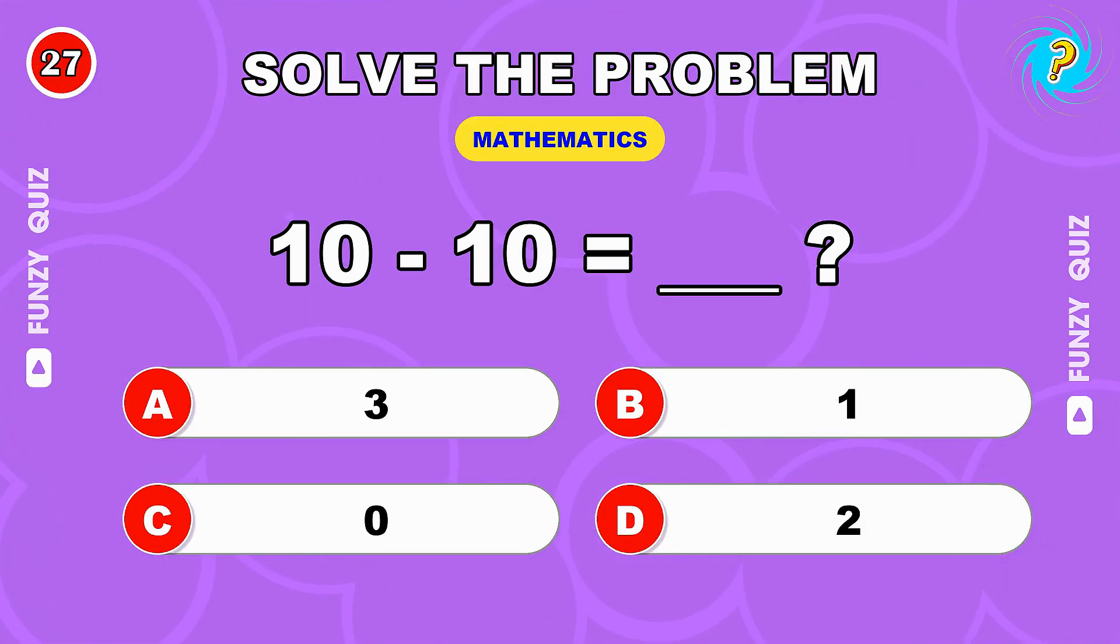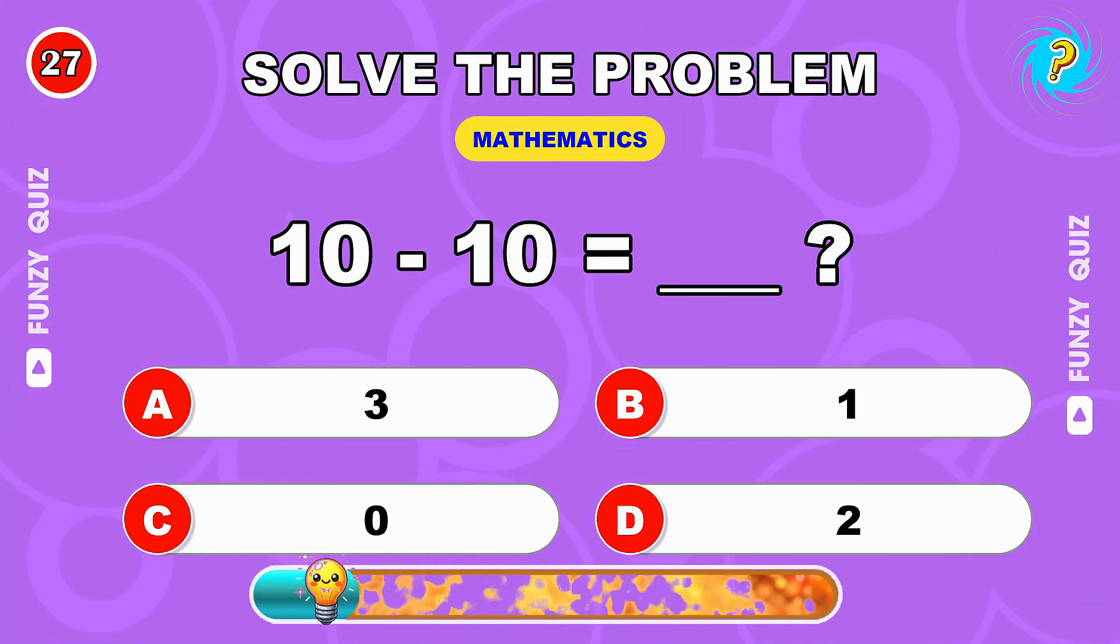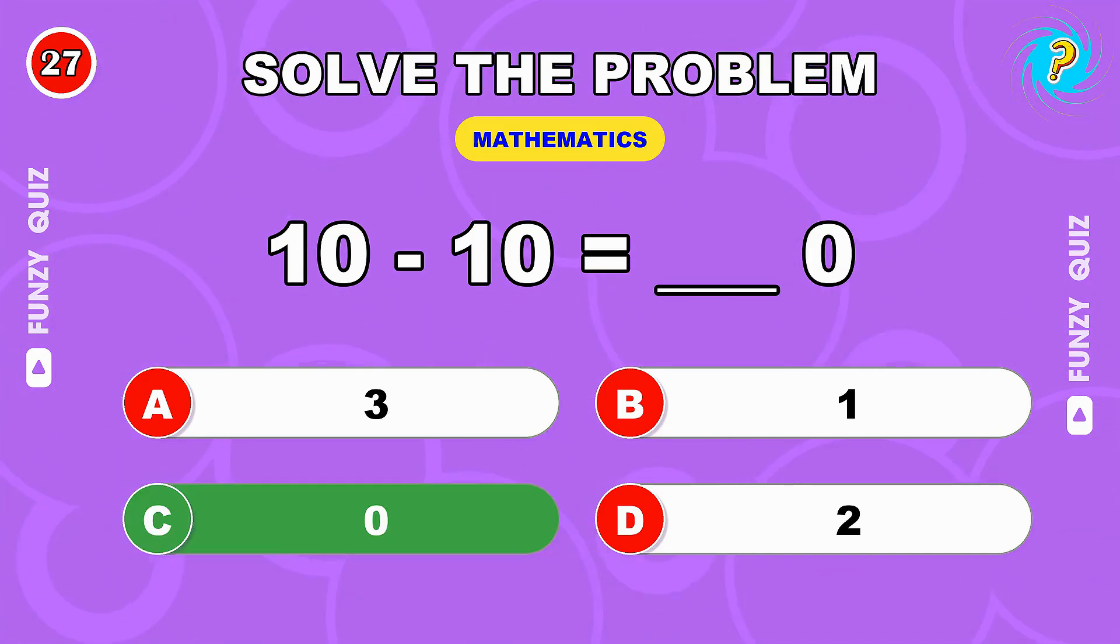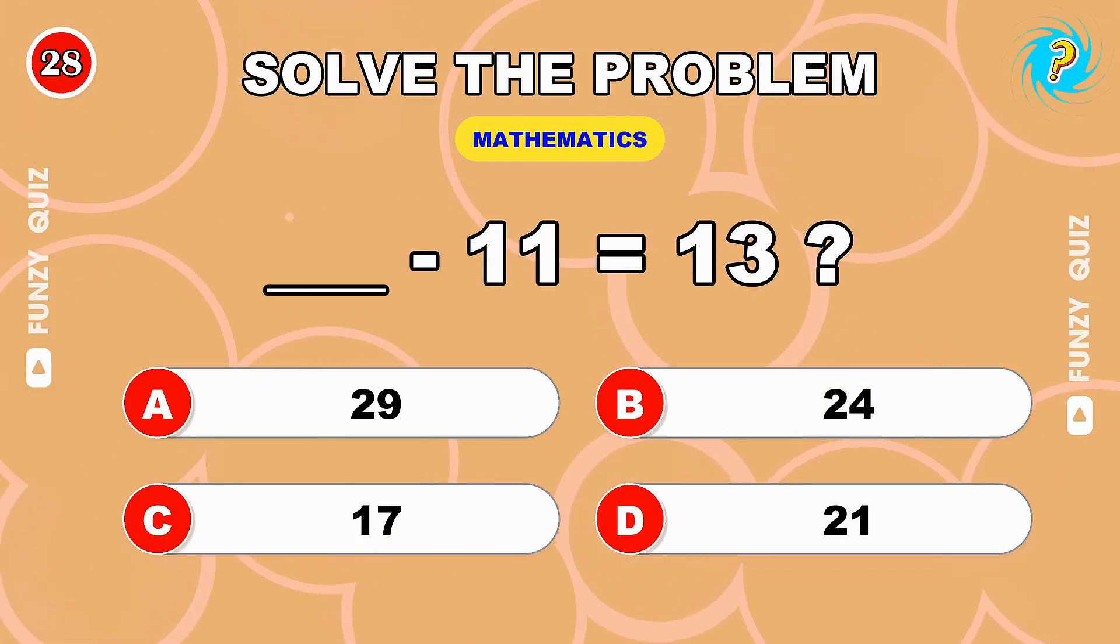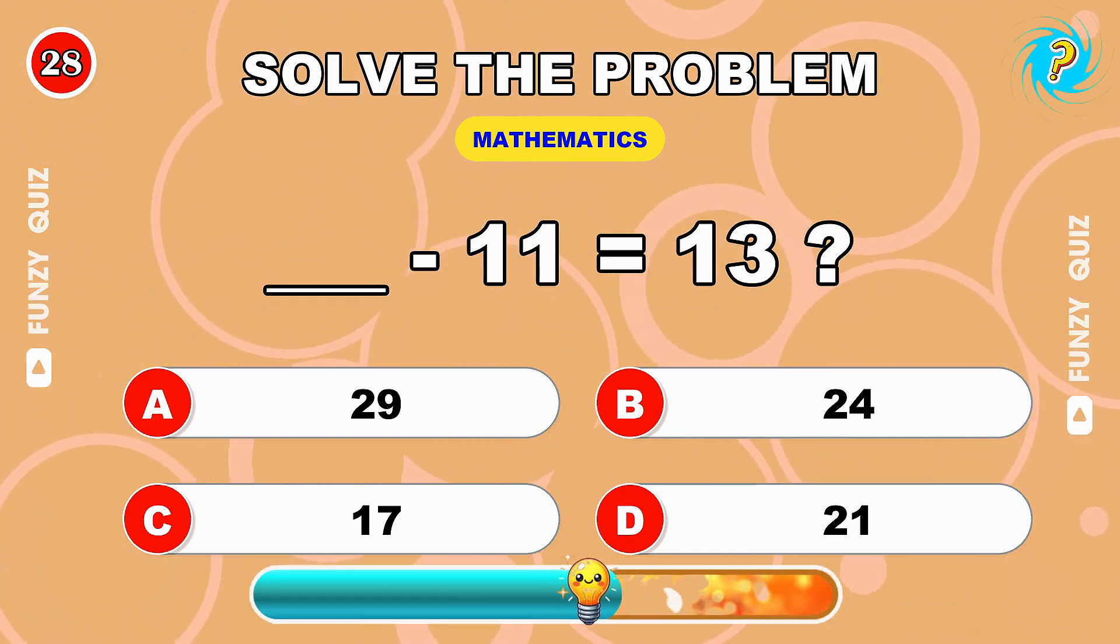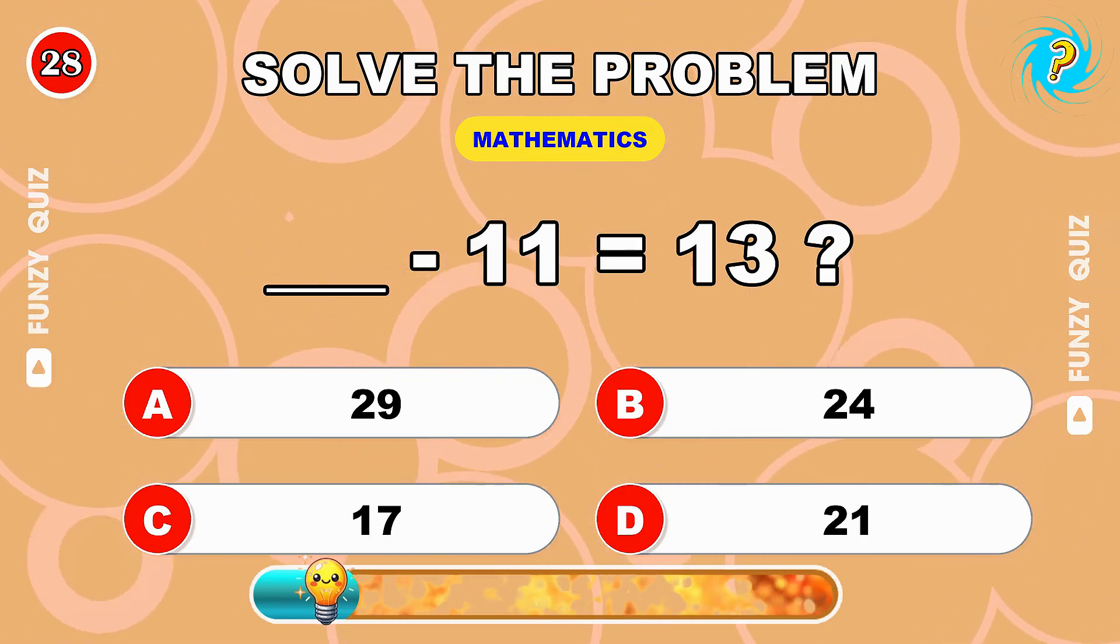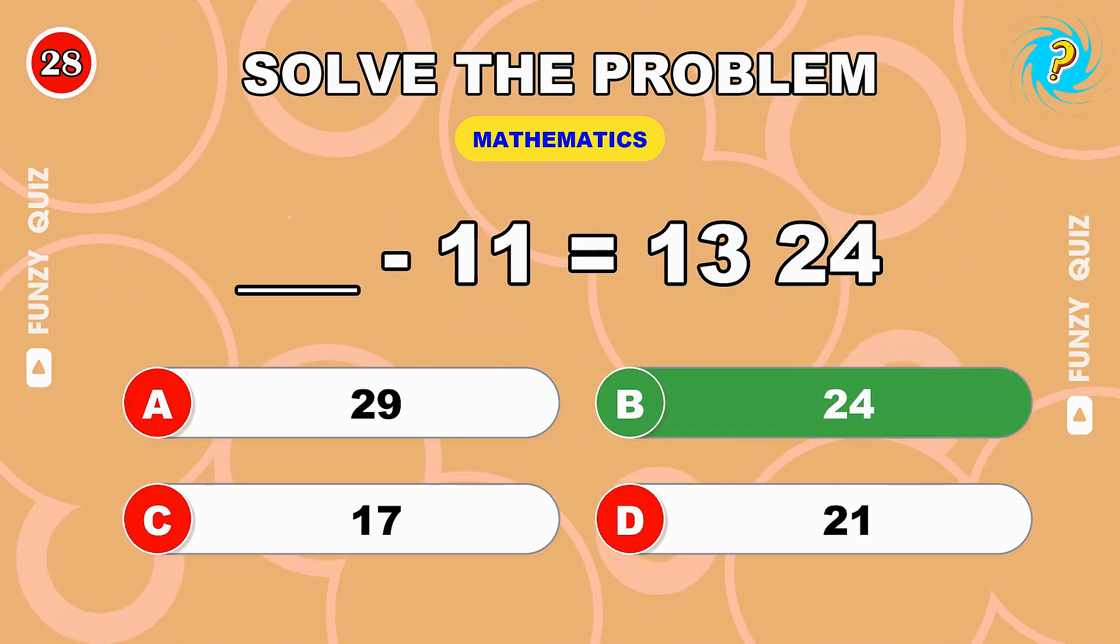Easy one: 10 minus 10. 0, of course. What number minus 11 equals 13? 24, perfect.